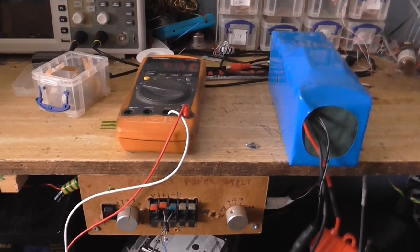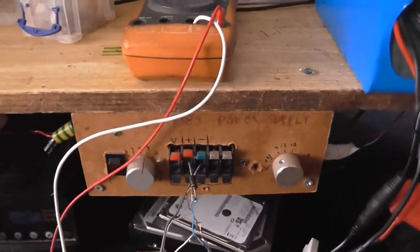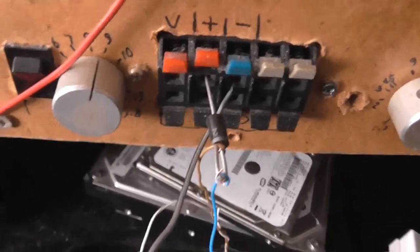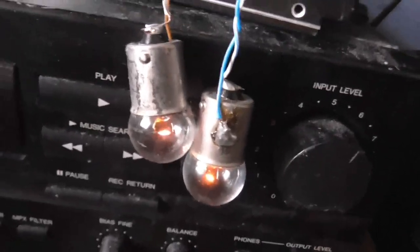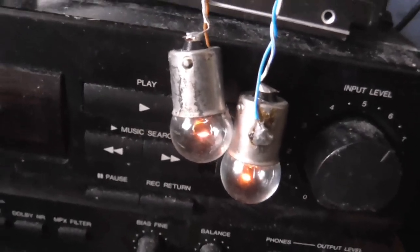So this is my temporary solution for charging the battery. I have my power supply connected to the battery through this diode, so the battery cannot back-feed into the power supply. And to limit the current, I've got these two light bulbs, which are progressively getting dimmer as the battery gets more and more charged.